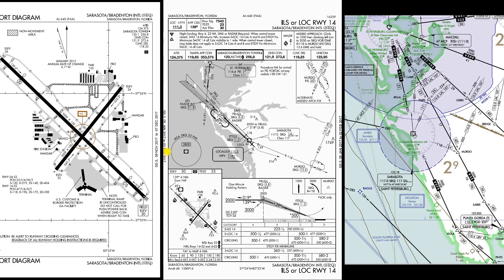Coming down here to our MSA — that is different from what we have on RNAV approaches. This is just a minimum safe altitude within 25 nautical miles, and in this case it's based off the Sarasota VOR. So within 25 nautical miles of the Sarasota VOR, 2,800 feet should give us a thousand-foot obstacle clearance. We have our valid dates here: valid January 5th through February 2nd. And we have our airport layout here.